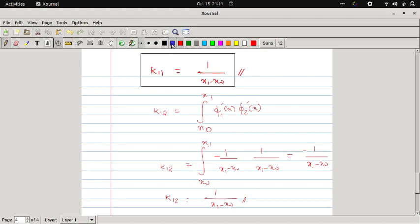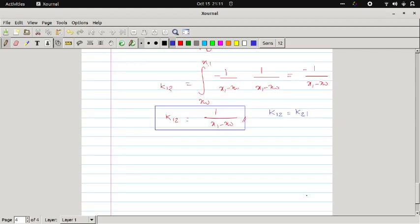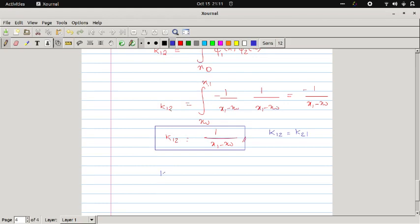Next step I want to define k_{2,1}. We know that k_{1,2} equal to k_{2,1} are always same. So what about k_{2,2}? We can easily find in a similar manner. k_{2,2} is 1 over (x_2 minus x_1). Please evaluate from your side. So this way we can define.